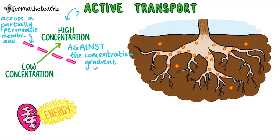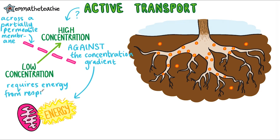Because active transport moves substances against the concentration gradient, it requires energy, and this energy comes from respiration. Can you remember the name of the organelle where respiration happens?